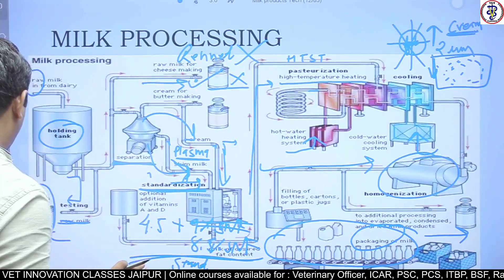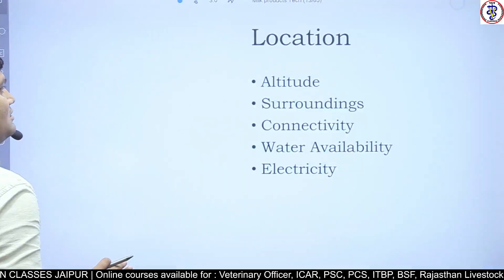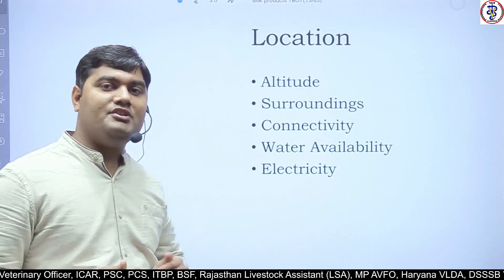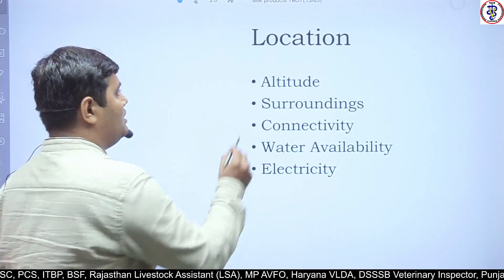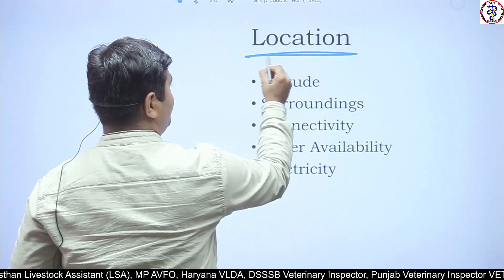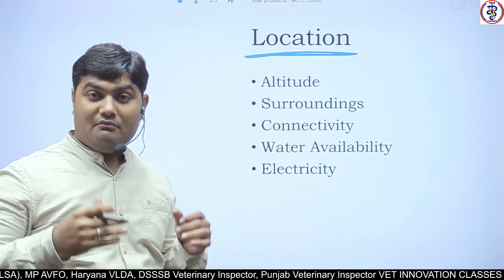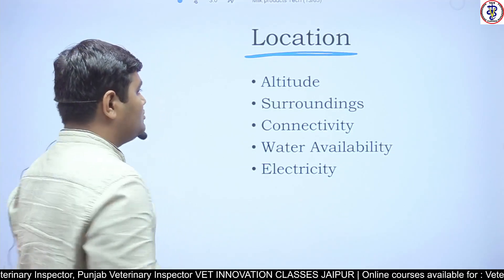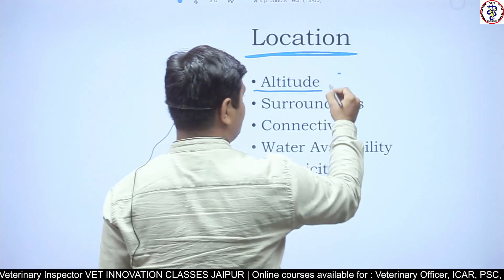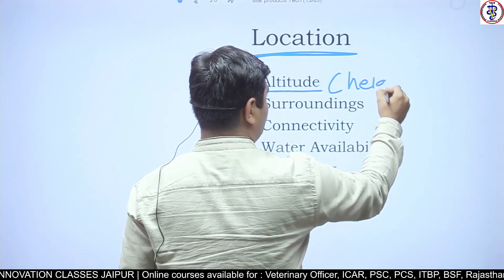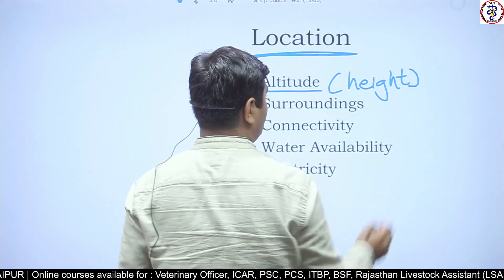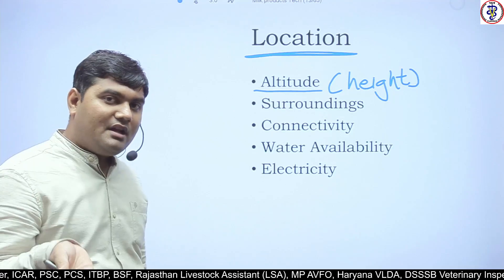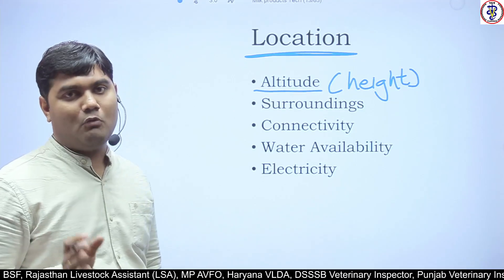Now, if you want to start a dairy processing plant, there are specific points to take care of. First, location is very important — at which place you establish your processing plant. Altitude, meaning height, is a key factor. The plant should be at a sufficient height.